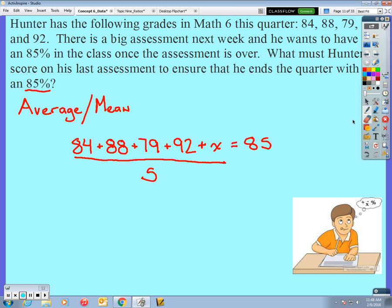Hunter had four assessments already this quarter. We don't know his average from those four, but we could easily calculate that. He has one more assessment left. This is that unknown, the last assessment, or if you want to call it, this is his fifth test. And that's why we're dividing by five.